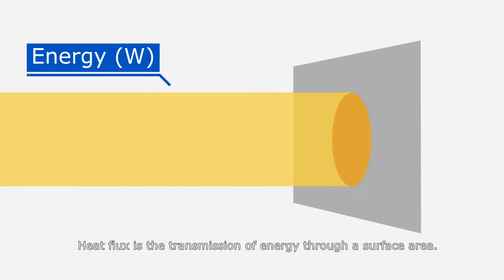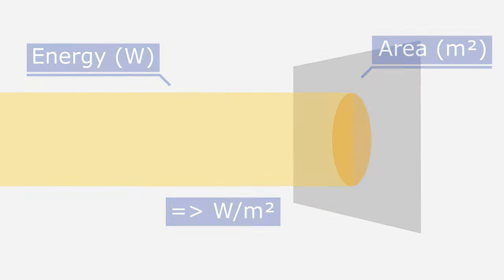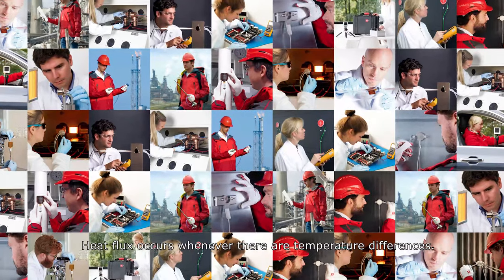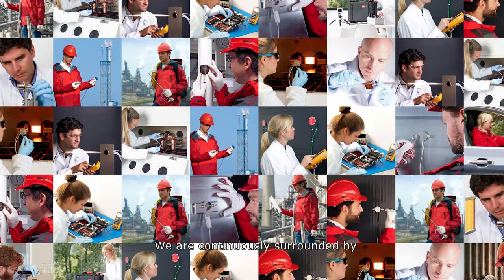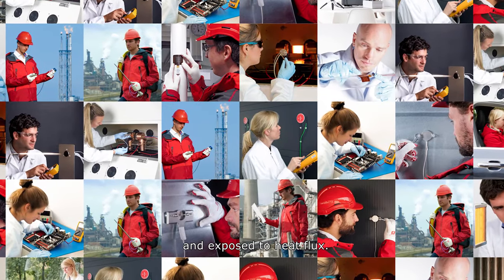Heat flux is the transmission of energy through a surface area. It is expressed in watts per square meter. Heat flux occurs whenever there are temperature differences. We are continuously surrounded by and exposed to heat flux.